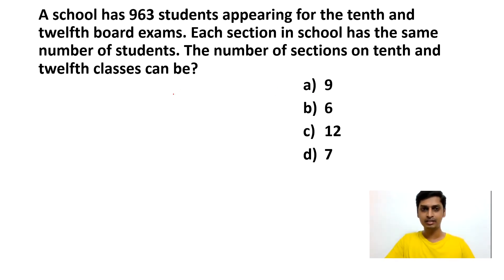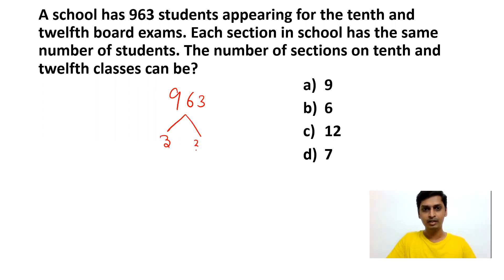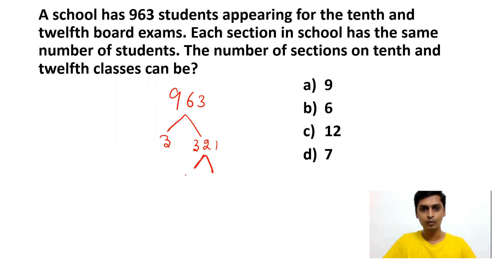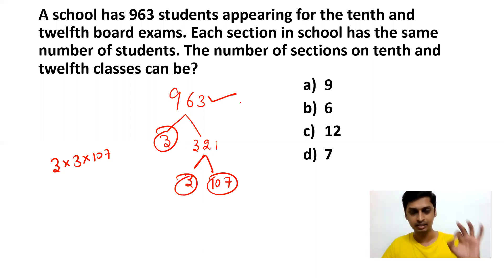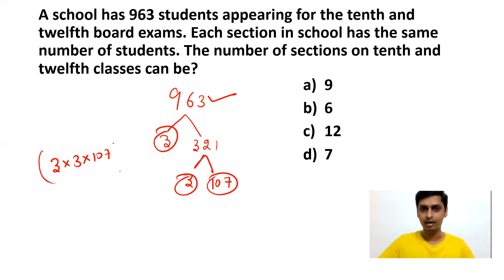We can write 963 as 3 × 321. Then we can again factor 321: 3 × 107 = 321. So the full factorization of 963 is 3 × 3 × 107, which equals 963. If any of these numbers appear in the answer options, you can choose that.